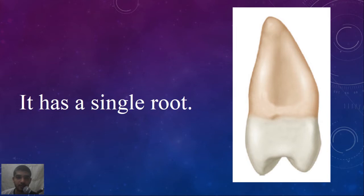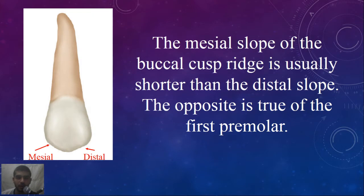The second difference is the root — the second premolar has a single root. The third difference: the mesial slope of the buccal cusp ridge is usually shorter than the distal slope, while the opposite is true of the first premolar. So here, the mesial slope is shorter than the distal slope.